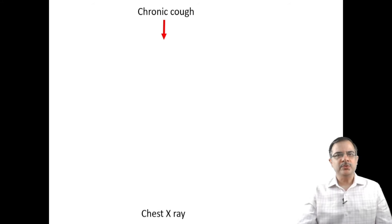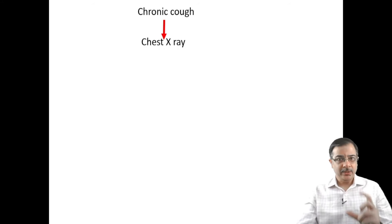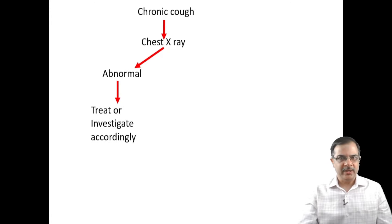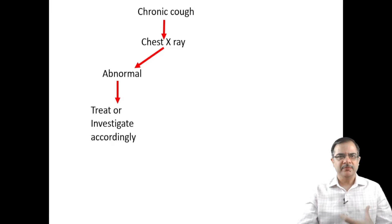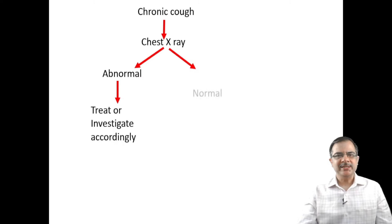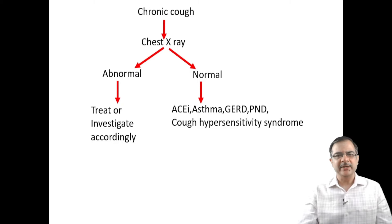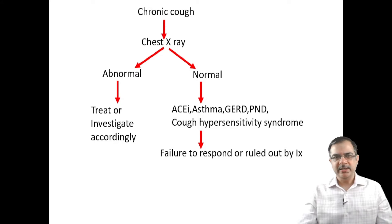In summary, when a patient with chronic cough presents, take a detailed clinical history and thorough examination, then advise a chest X-ray. If the chest X-ray is abnormal, investigate and treat accordingly — for example, bilateral hilar lymphadenopathy suggests sarcoidosis, and an interstitial pattern warrants HRCT. If the chest X-ray is normal, consider the five etiologies: ACE inhibitors, cough variant asthma, GERD, post-nasal drainage, or cough hypersensitivity syndrome, and treat accordingly.